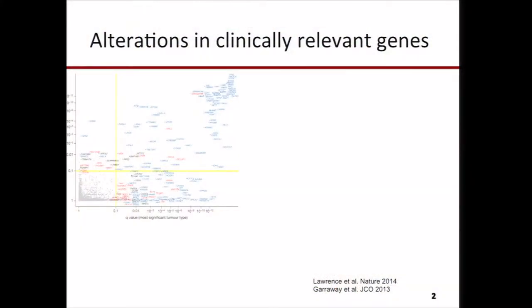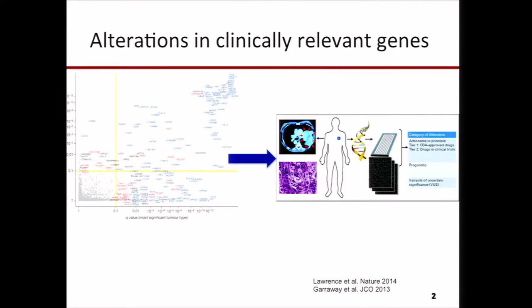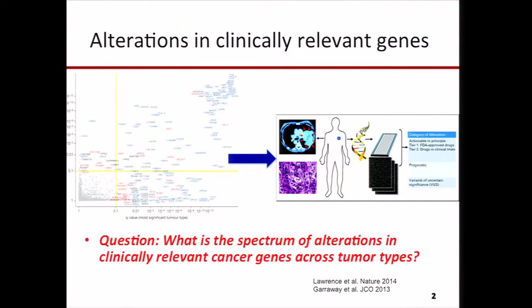I don't need to tell the people in this room how much TCGA has helped identify alterations that may contribute to many different tumor types. However, less attention was given to this data with a clinical lens. As these profiling technologies that enable TCGA move into the clinic, an understanding of the landscape of clinically actionable somatic alterations may inform patient care. So the question is: what does the spectrum of alterations in clinically relevant genes look like across tumor types?